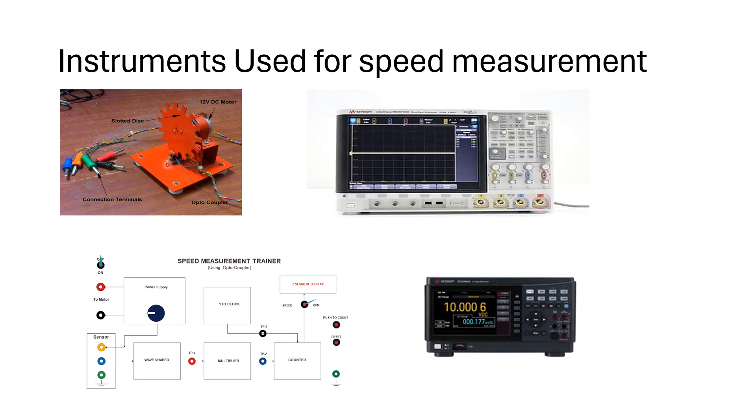When any obstacle comes in front of optocoupler it sends a signal to this oscilloscope and oscilloscope generates the waveform of that signal. And it shows a frequency. It shows two types of frequency: one is the waveform frequency and the other is the multiplier frequency. And the multiplier frequency is almost similar to the number shown on the 7-segment display.